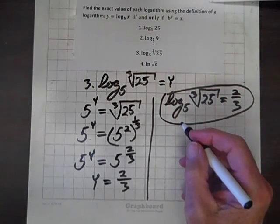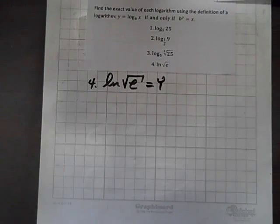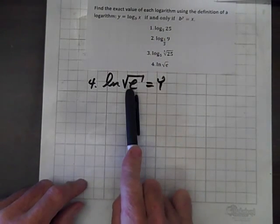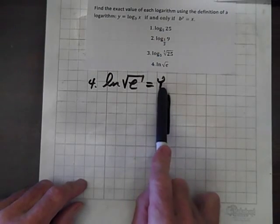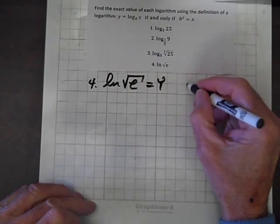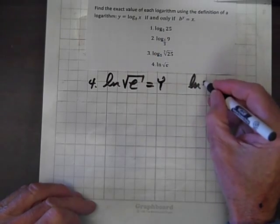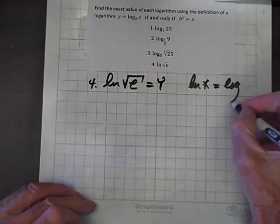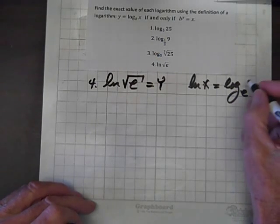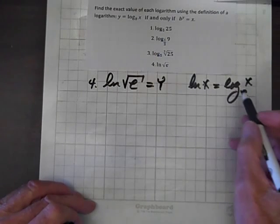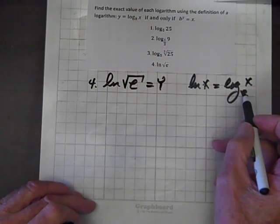One more to go. For our final expression, we have the natural log of the square root of e, and we'll set that equal to y. To clarify, ln(x) equals log to the base e of x — this is called the natural log, and it's implied that the base is e.